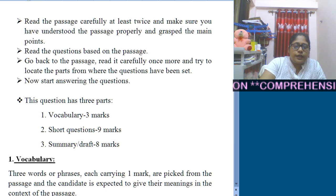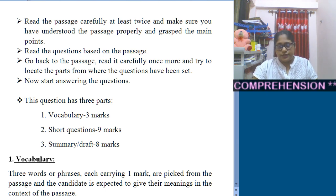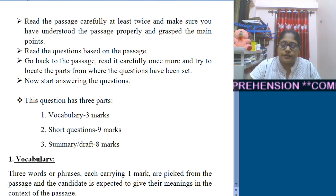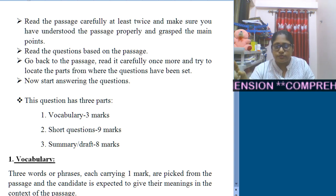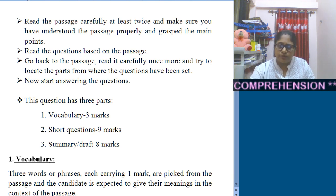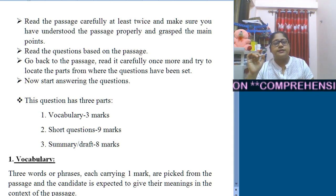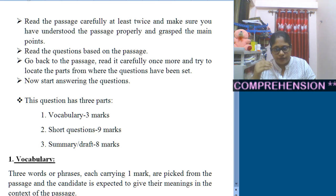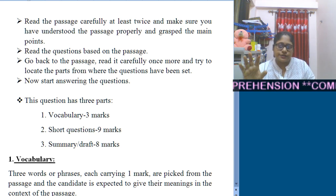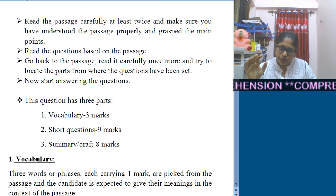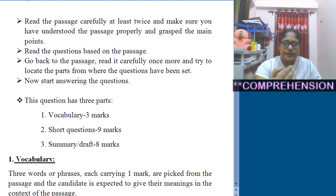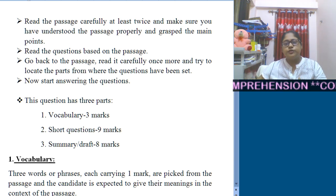Next part is short questions — that will be question B. Question B will have five questions carrying nine marks in total. The first question generally carries one mark and the remaining four carry two marks each. Sometimes one may carry three marks, but in total it will be nine marks. After reading the passage you need to read this part first, then I will discuss each part individually in more detail.